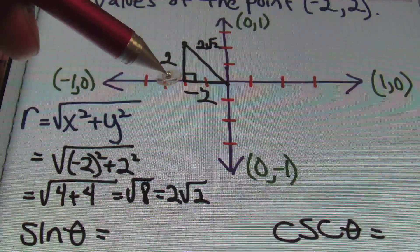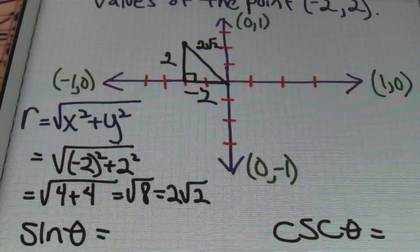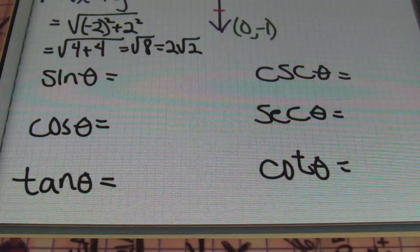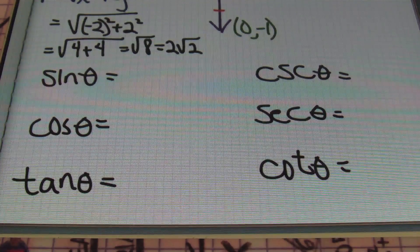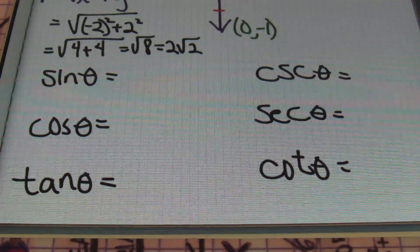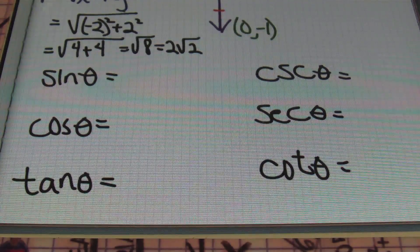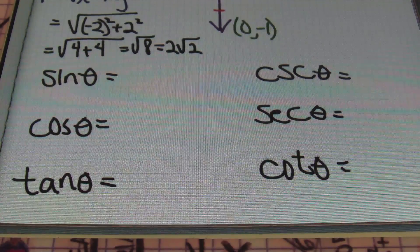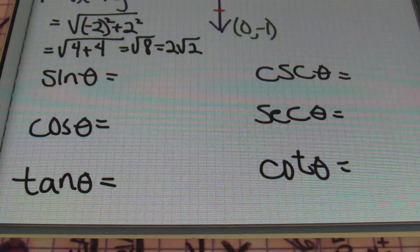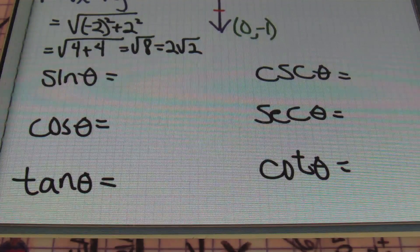Thus far, I have an x value of negative two, a y value of positive two, and I have an r value of two square root of two. From this point, we can go ahead and find the values. Keep in mind that I use right triangles to create my values. Some people do use the unit circle to come up with their values and they memorize them, but I prefer the method of using the right triangles. You can always generate the values using it that way.